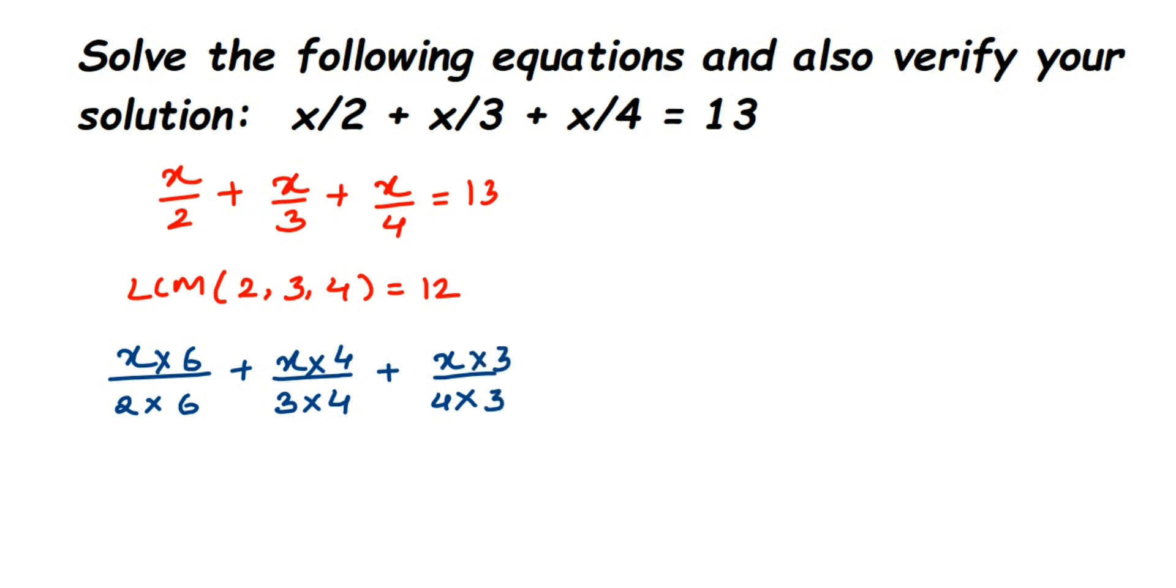It will become 6x/12 + 4x/12 + 3x/12 = 13. Now denominators are the same, so we just add the numerators: (6x + 4x + 3x)/12 = 13.